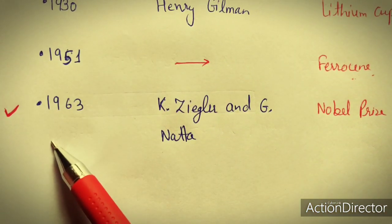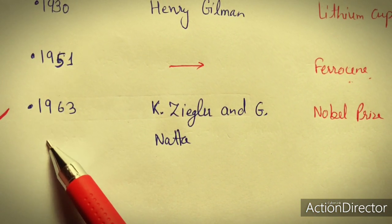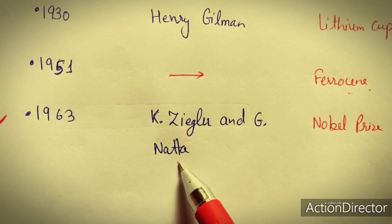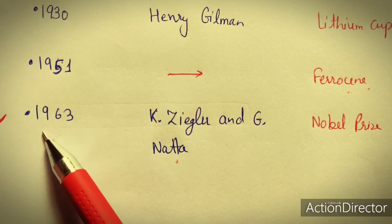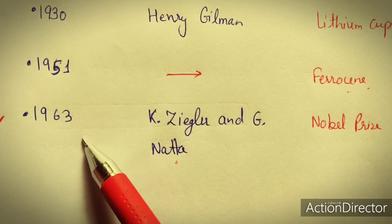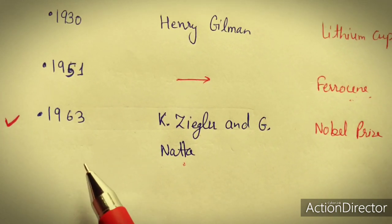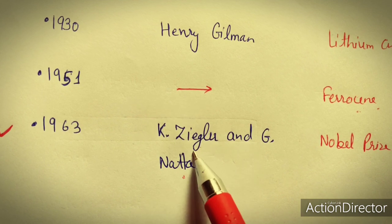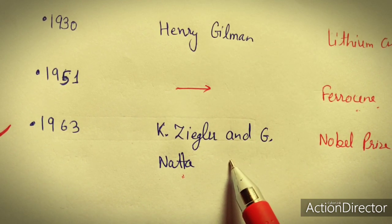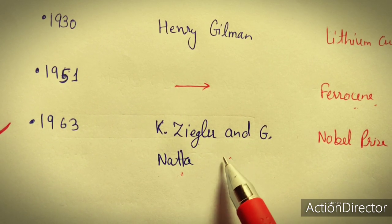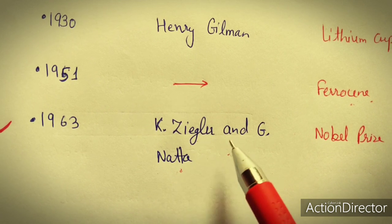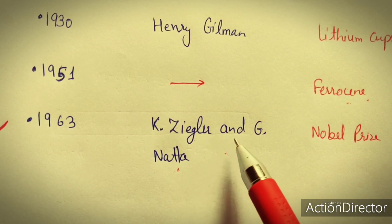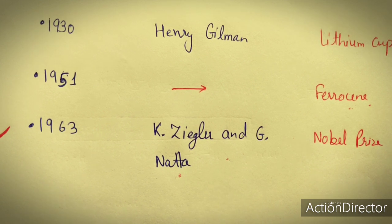The second Nobel prize in organometallics went to K. Ziegler and G. Natta in 1963 — after 1912, this was the next Nobel prize for organometallic chemistry. Ziegler and Natta are known for the important Ziegler-Natta polymerization reaction.